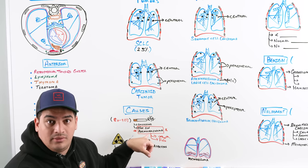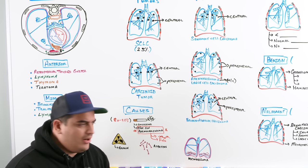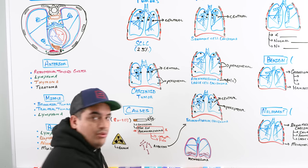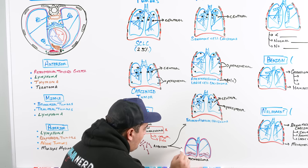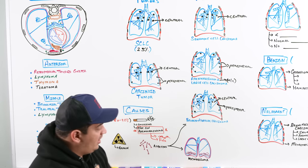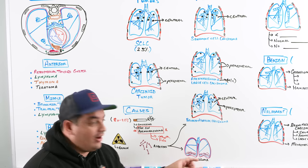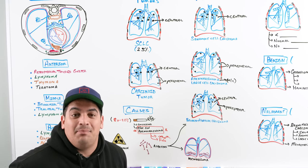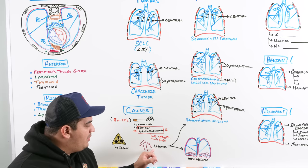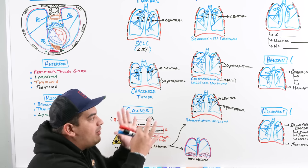Other causes include radon exposure, asbestos exposure, and other occupational hazardous materials. Asbestos exposure has a particularly high association with bronchoalveolar carcinoma and also carries a very high risk of mesothelioma — a cancer involving the pleura. Asbestosis also causes pleural plaques at the lung bases. On microscopy of a bronchoalveolar lavage or sputum sample, asbestosis shows ferruginous bodies.